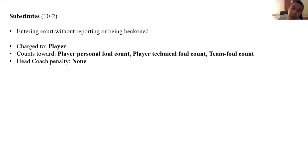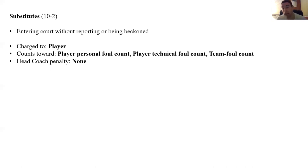Substitutes entering the court without reporting or being beckoned: this is charged to the player — it counts toward the player personal foul count, the player technical foul count, and the team foul count. There is no penalty to the head coach. If I see players coming in without being beckoned while another official is reporting a foul at the table, the first thing I'll do is proactively push them back to the sideline and tell them to wait until the official is done and we'll beckon them in. But if a player looks you dead in the eye and comes on the court regardless, that's a technical foul.